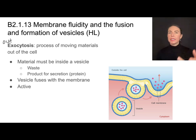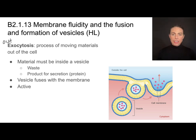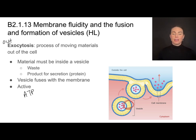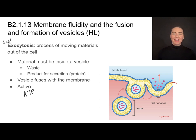The material to be exported via exocytosis must be wrapped in a vesicle, because this vesicle will eventually fuse with the membrane. This could be a waste product or a product for secretion like a protein. It's an active process, so energy in the form of ATP is required. What's important is that this vesicle is eventually going to become part of the cell membrane, so it needs to be made of the same components — a lipid bilayer. When it fuses, the cell membrane now contains parts that used to be the vesicle.